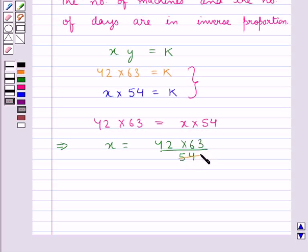9 times 6 is 54, and 9 times 7 is 63, and 6 times 7 is 42. So we have x is equal to 7 multiplied by 7, that is 49.